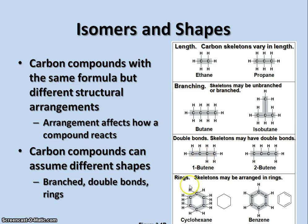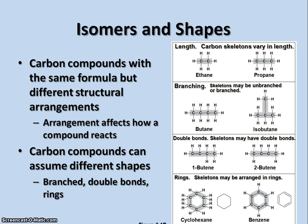Carbon compounds can also build rings — they can be arranged in a ring structure that is just carbon and hydrogen, like cyclohexane, or one that has double bonds and various other structures attached, as in benzene. There are lots and lots of different varieties of shapes of carbon compounds, making carbon extremely versatile in making compounds.